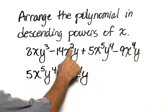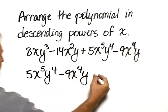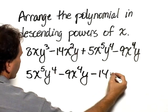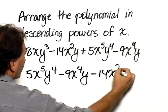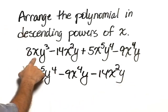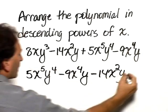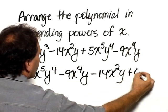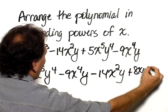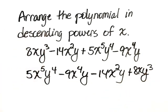Then x squared is the next one, so minus 14x squared y. And then finally plus 8xy cubed.